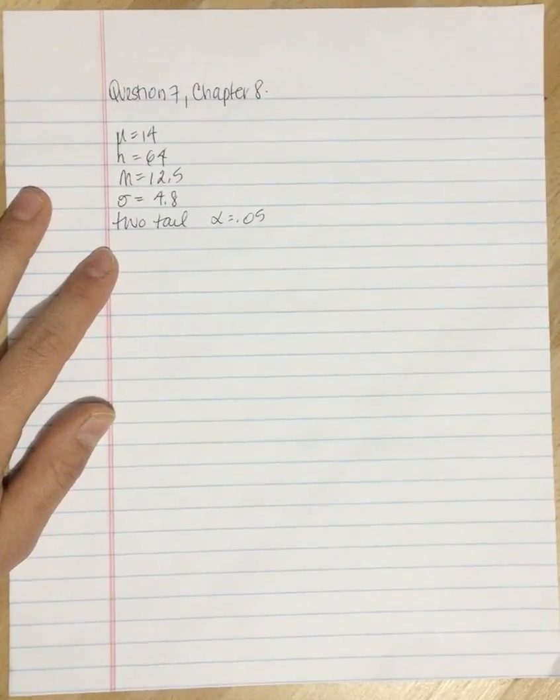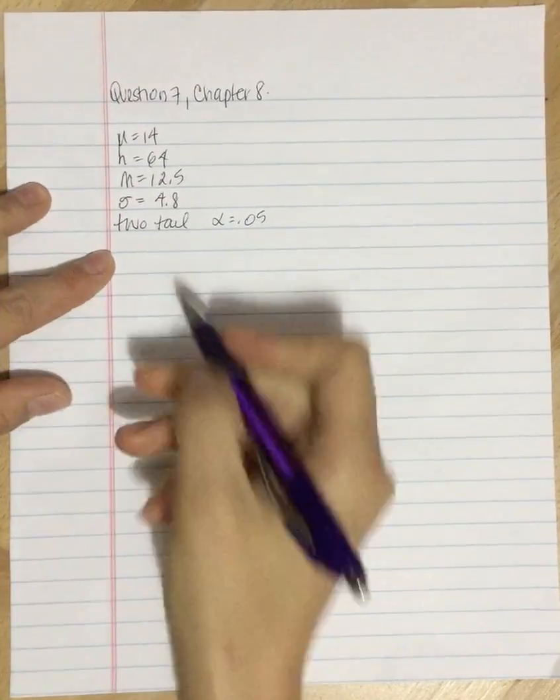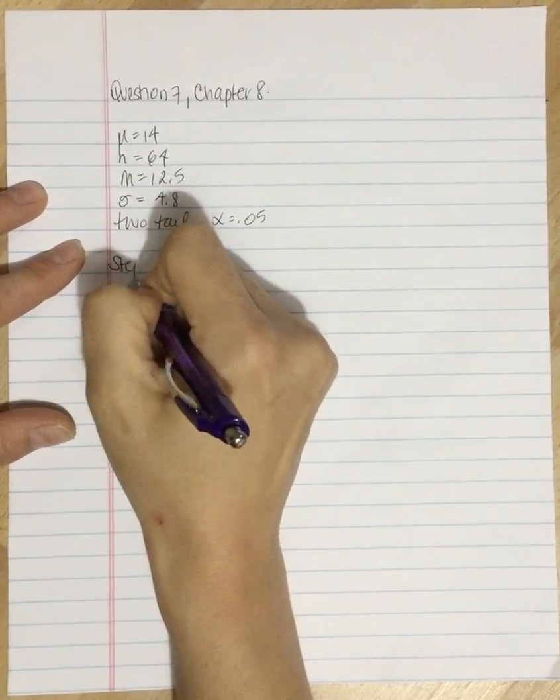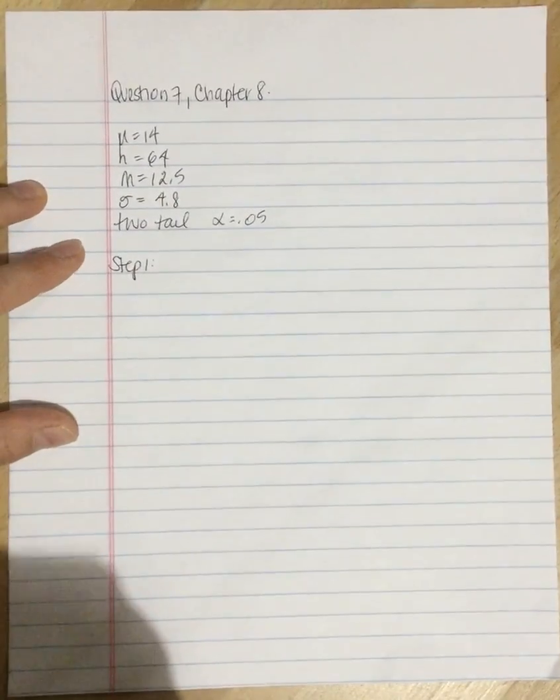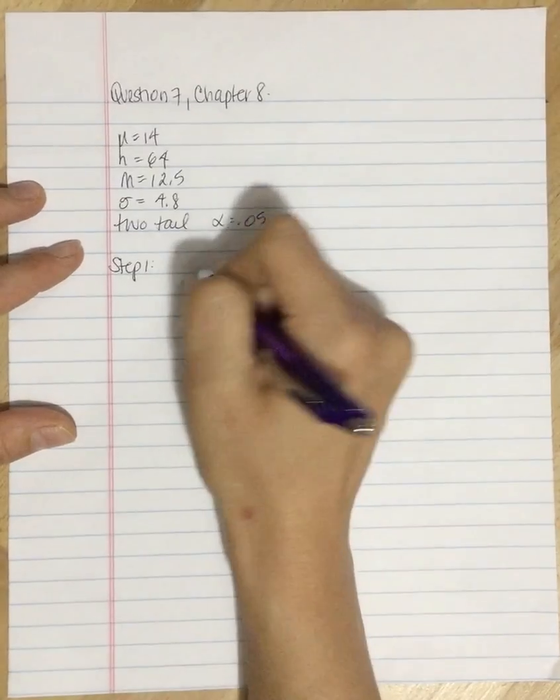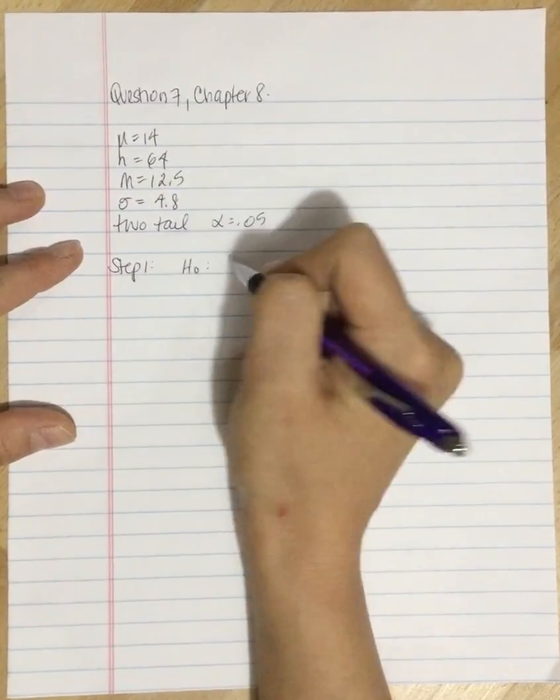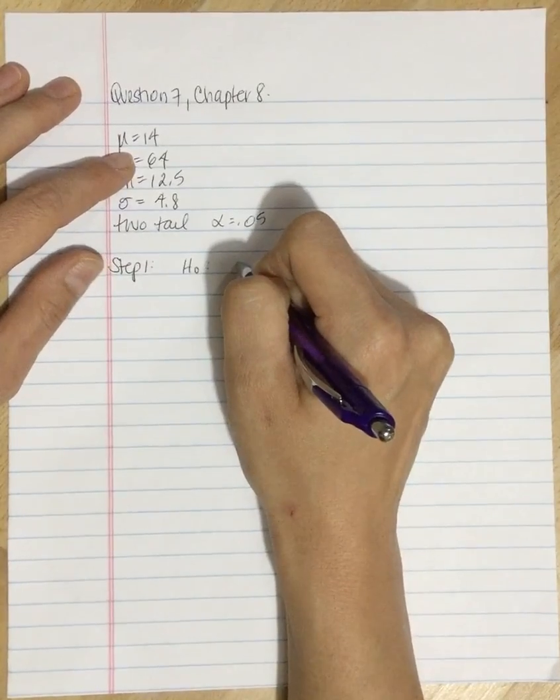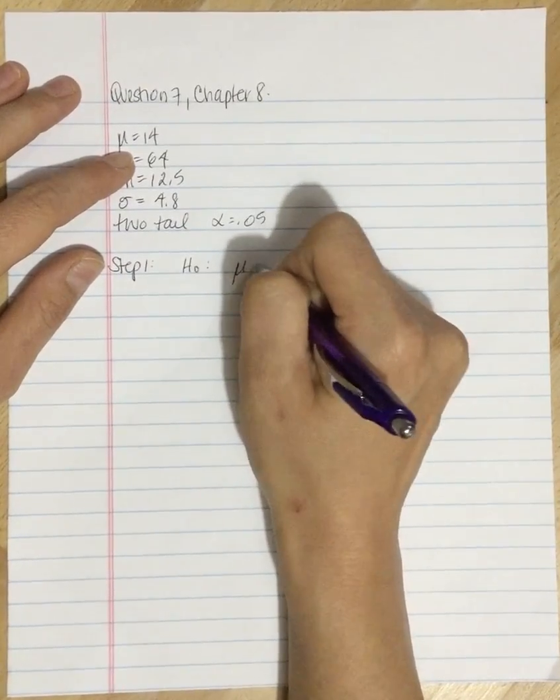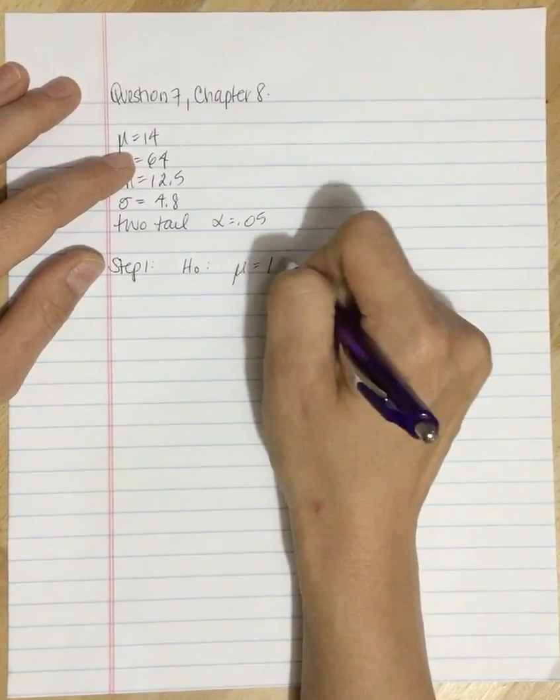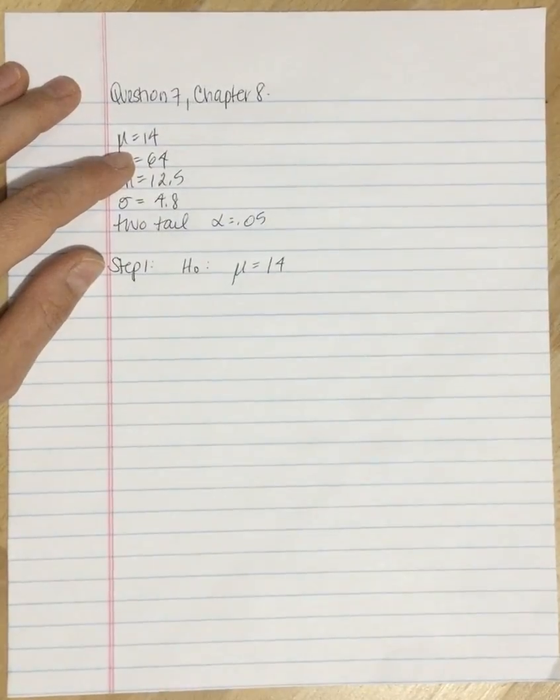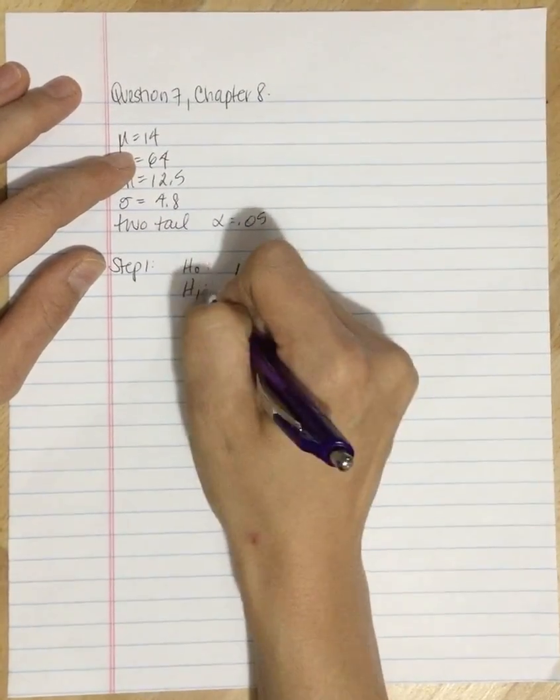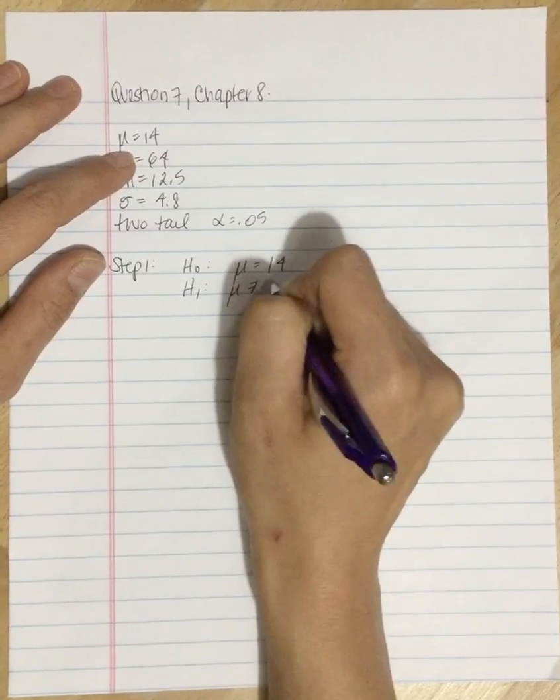So using the four-step process, step one is we need to state our hypotheses. Our null is always that there is no difference and our population value, that the mean of the new population is still 14. Our alternate is that it's not 14.